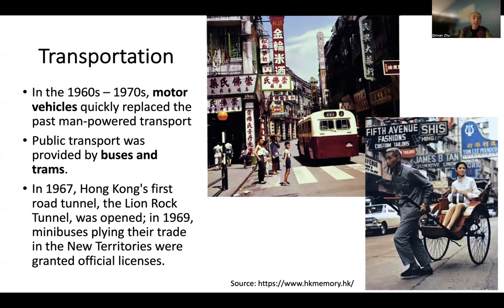Transportation during the 1960s in Hong Kong was also changing. Man-powered transport quickly became a thing of the past when streets were taken over by motor vehicles. Public transportation was provided by buses and trams. Here are two pictures from 1960s Hong Kong — one showing the bus, and the other showing traditional man-powered transport.